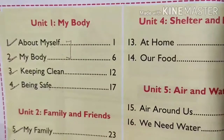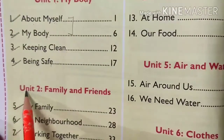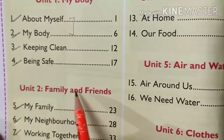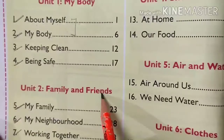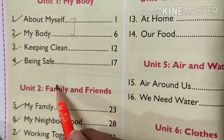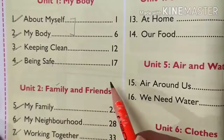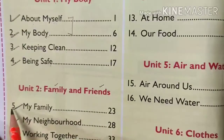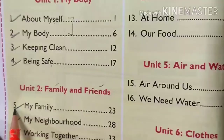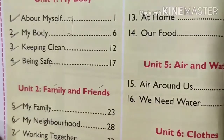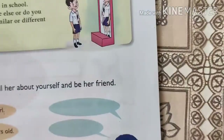Now I am going to start Unit 2: Family and Friends. In this unit, we will discuss about our family members and about our friends. Our 5th chapter is My Family.